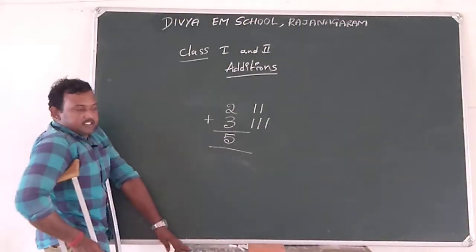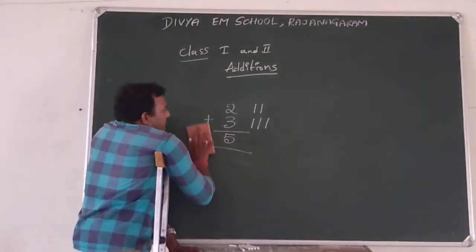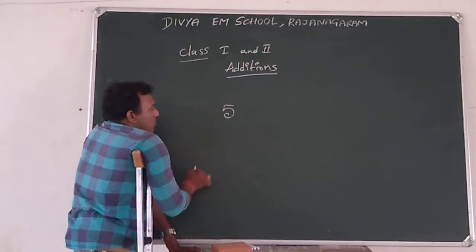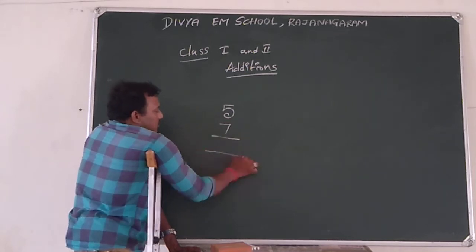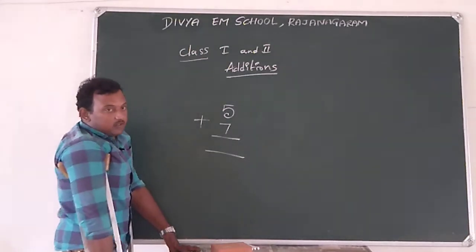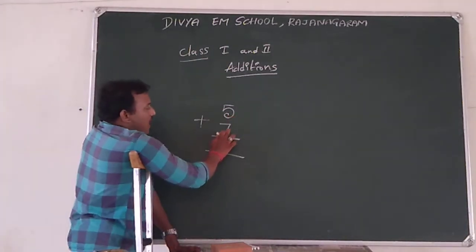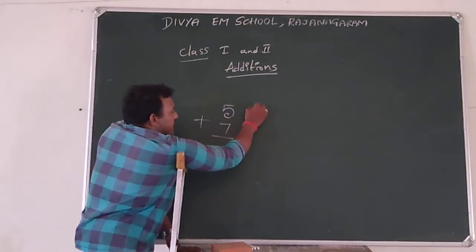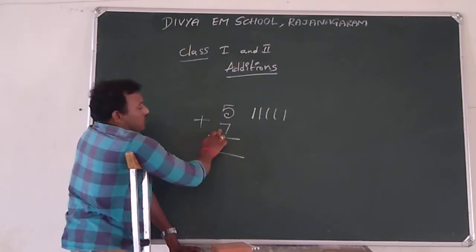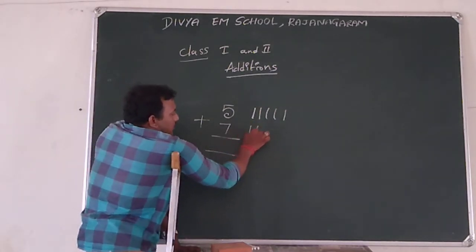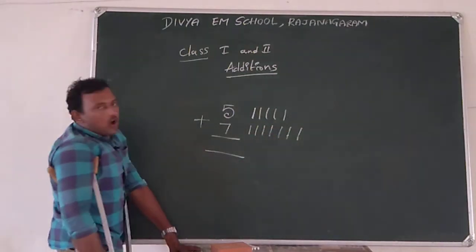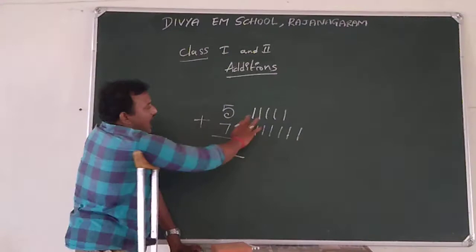Next we will do another example. We take 5 and 7. Plus is for addition. So we take 5 and 7. For 5, we take 5 sheets: 1, 2, 3, 4, 5. For 7, we take 7 sheets: 1, 2, 3, 4, 5, 6, 7. So we are going to count all the sheets here.